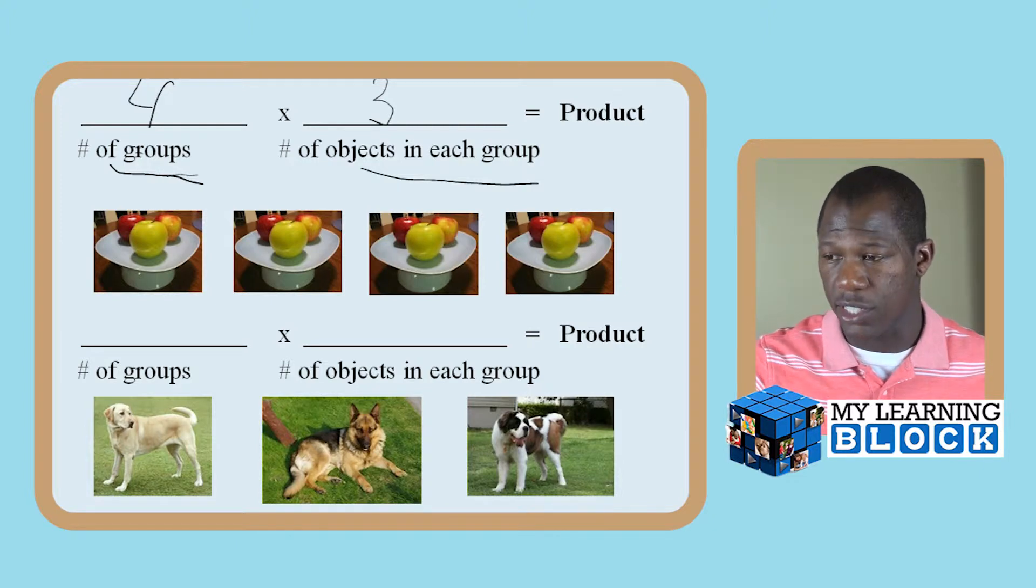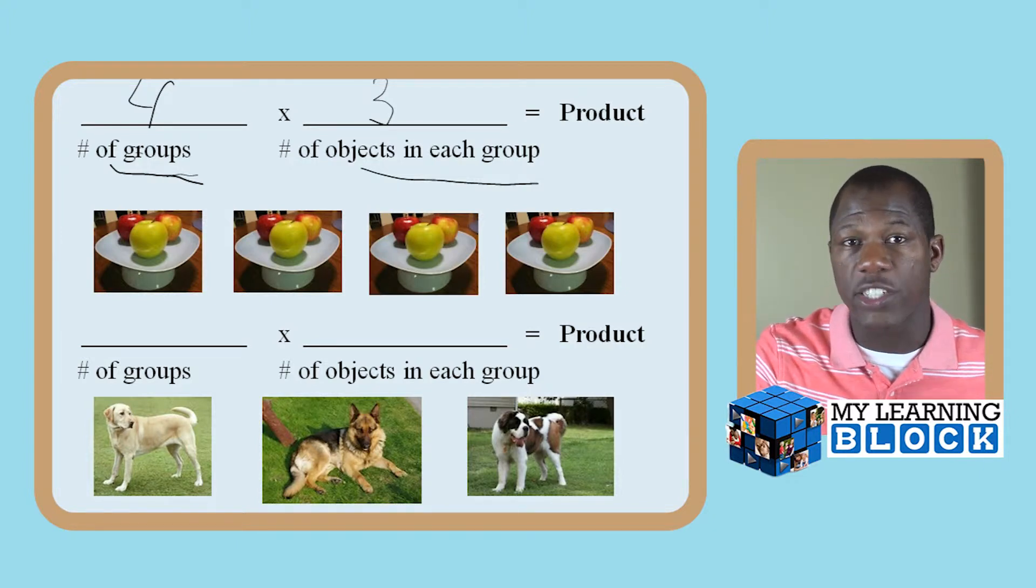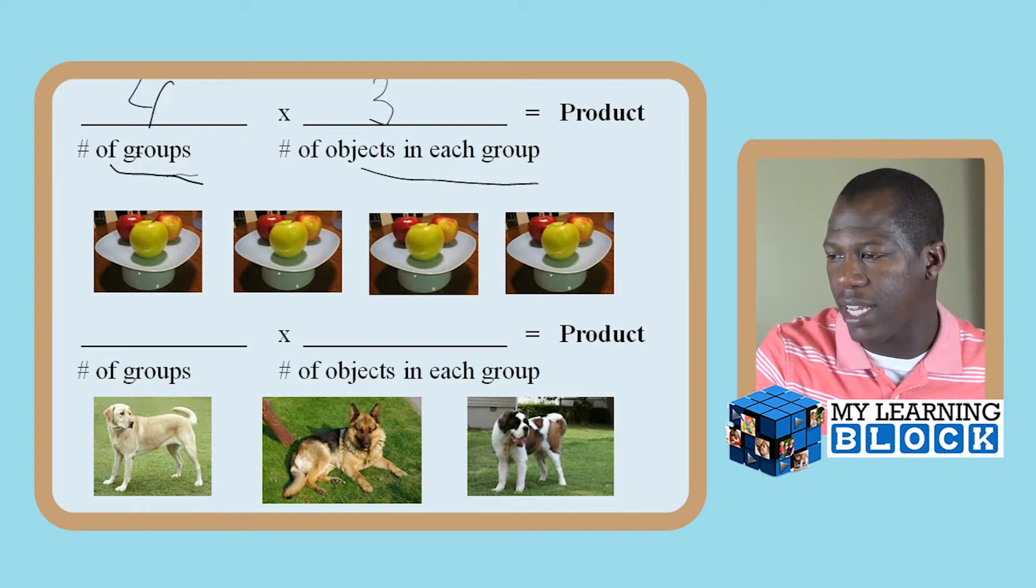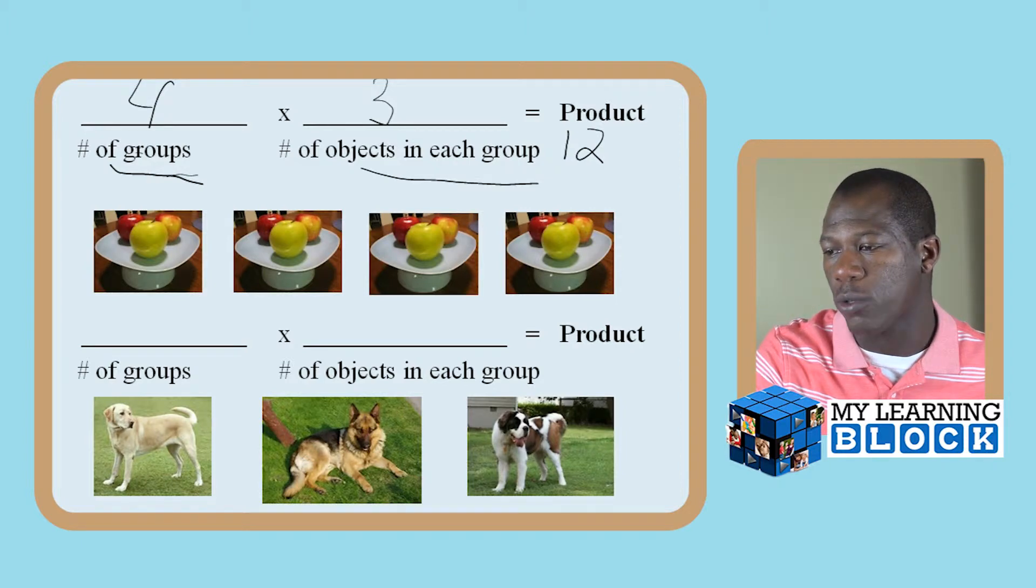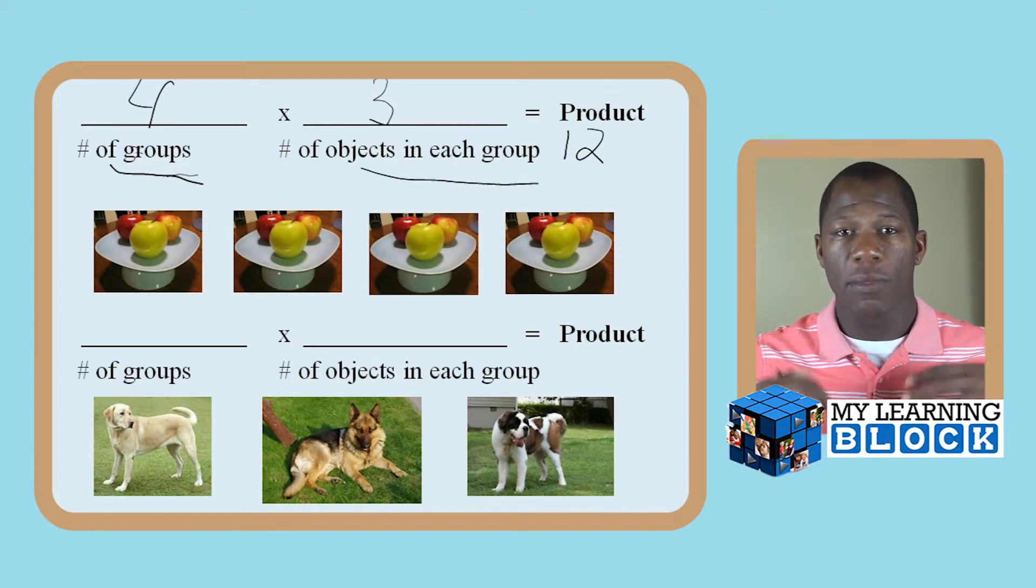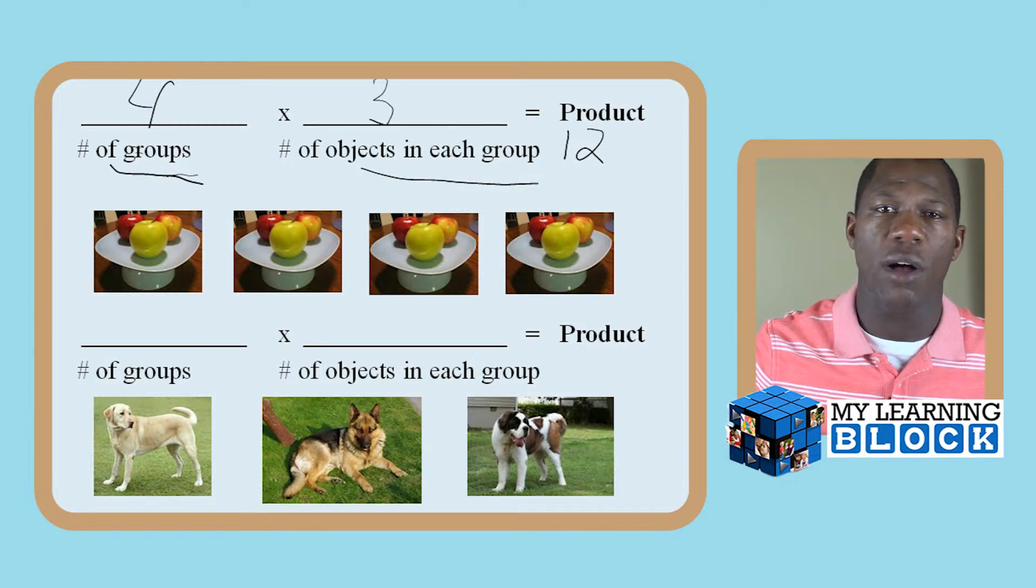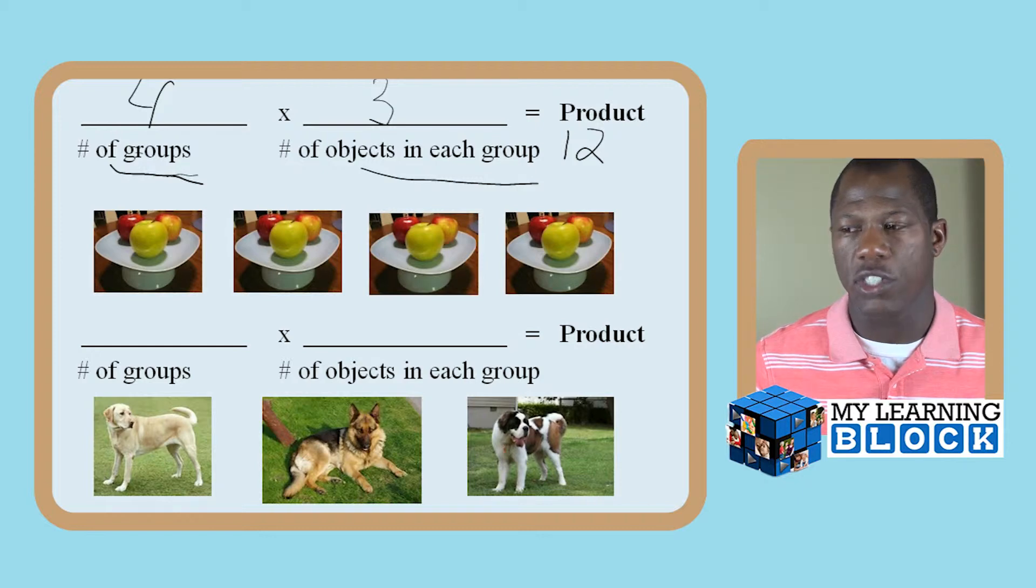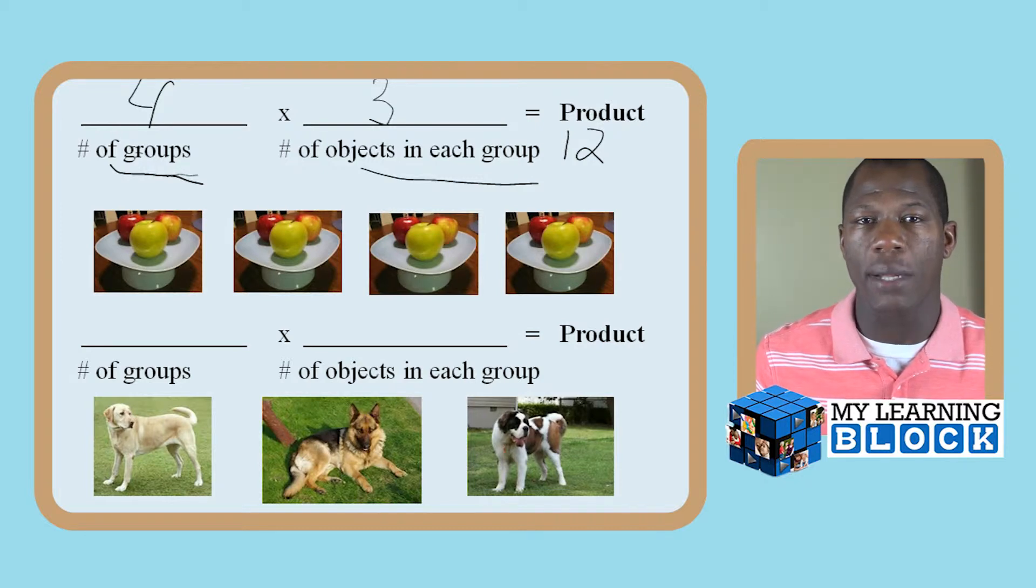That gives us a total of, if you want to let your child go ahead and practice this process, one, two, three, four, five, six, seven, eight, nine, ten, eleven, twelve. Therefore four times three equals twelve. Your child will really enjoy putting these objects in groups. However, make sure that they are focusing on that one-to-one correspondence, counting each and every individual object.